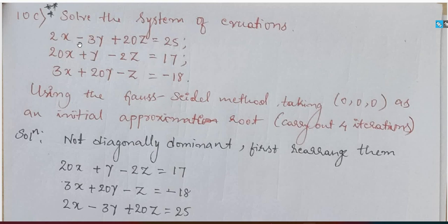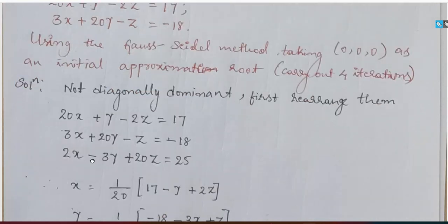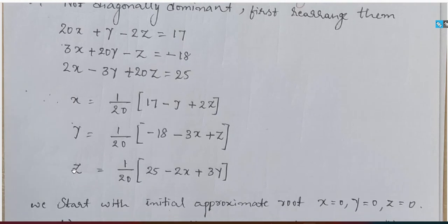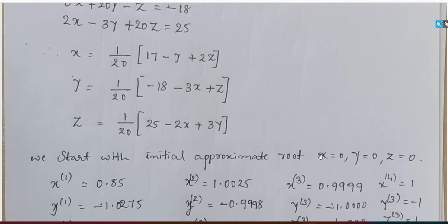Looking at the second column, this value is the largest, so the third equation is converted to the second equation, and the original first equation moves to the third. After rearranging, I redefine x, y, and z accordingly and rewrite x, y, z as iterative formulas. Starting with the initial approximation x = 0, y = 0, z = 0.